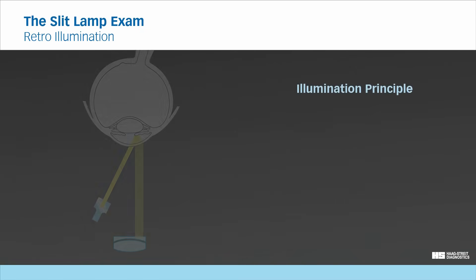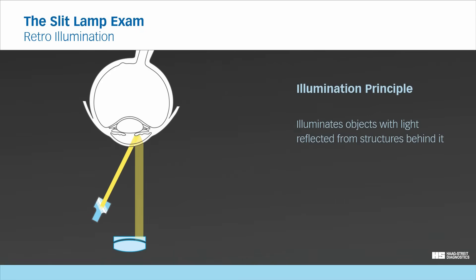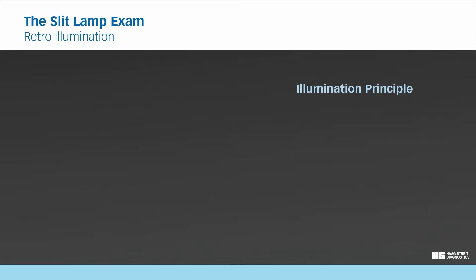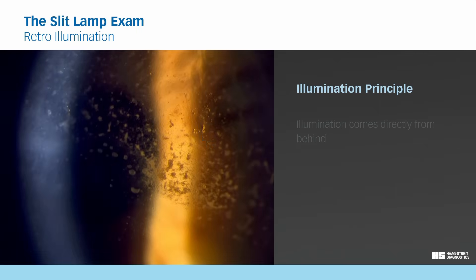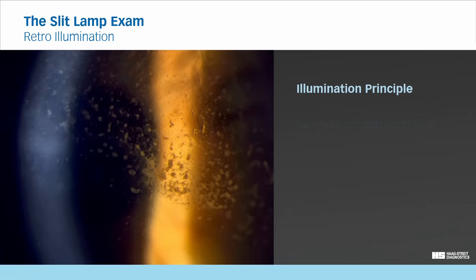Retroillumination is a technique which illuminates the observed object with light reflected from the structures behind it. This illumination technique can be divided into direct and indirect retroillumination. With direct retroillumination, the observed area is directly illuminated from behind. With indirect retroillumination, the observed area lies adjacent to the area that is directly illuminated from behind.